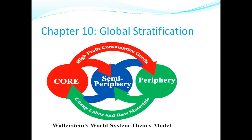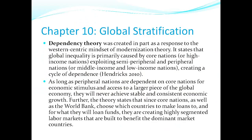In Wallerstein's world system theory model, core nations put out high-profit consumption goods and in return receive cheap labor and raw materials from the periphery and semi-peripheral countries. Dependency theory states that global inequality is primarily caused by core nations exploiting the semi-peripheral and peripheral nations, creating a cycle of dependence.